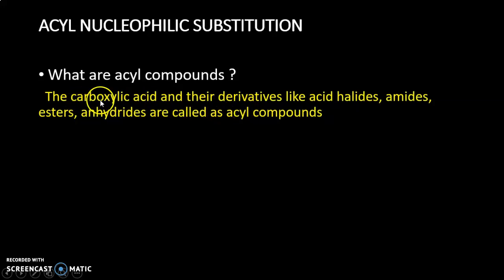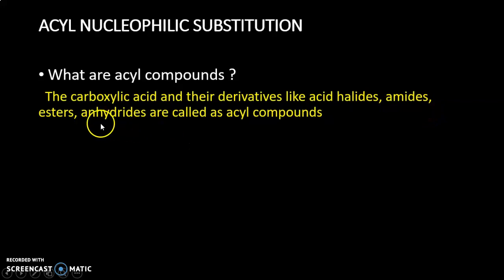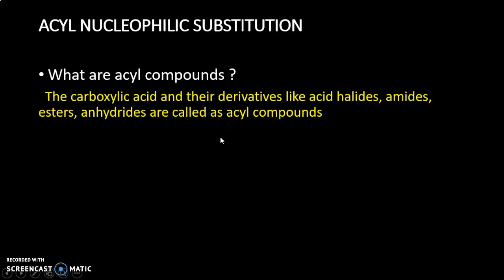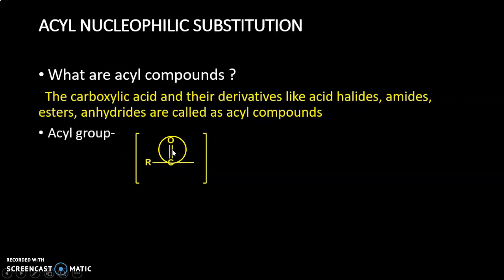Acyl compounds are carboxylic acid and their derivatives. Carboxylic acid has the functional group R-C(=O)-OH, and their derivatives include acid halides, amides, esters, and anhydrides. All these compounds are called acyl compounds because they have one thing in common: the acyl group. The acyl group is the functionality R-C(=O)- with a single bond.